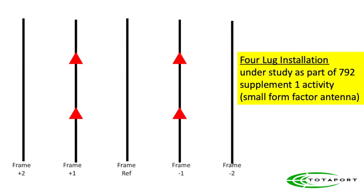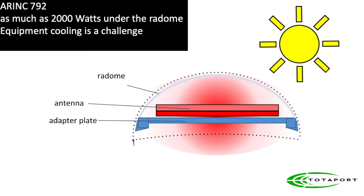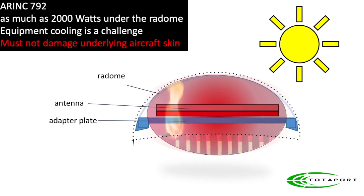ARINC 792 Supplement 1 is currently in draft form. We are considering a four-lug mounting by abandoning the center two positions to allow for a more narrow frontal profile. Some active array antennas can consume as much as 2,000 watts under the radome, and when you add solar heating it can become a real challenge. We are also concerned with excessive temperatures degrading the integrity of the skin or structure underneath the antenna.